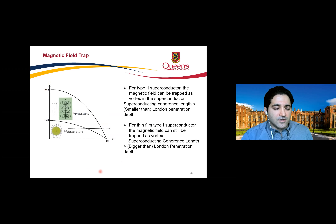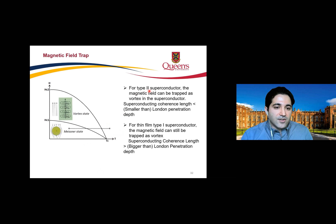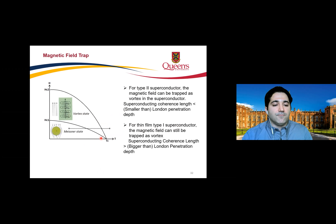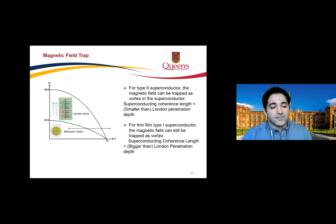One important external disturbance is magnetic field. There are two types of superconductors. In type II superconductors — and also thin films that behave like type II — we have vortex states where magnetic flux quanta penetrate the metal. Based on the Lorentz force, circulating currents form and can be trapped inside the thin film. In type I superconductors we have the Meissner effect, where external magnetic field does not penetrate the metal.